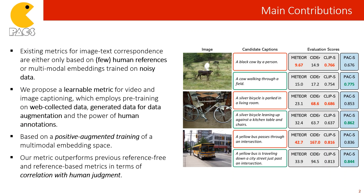Therefore, we propose a learnable metric for video and image captioning. Our approach involves pre-training on a combination of web-collected data, generated data, and human annotations. Our proposed metric, PACScore, is trained via a Positive Augmented Contrastive Learning approach, and it surpasses previous reference-free and reference-based metrics in terms of its correlation with human judgment.